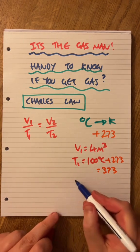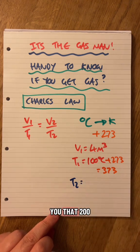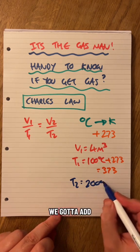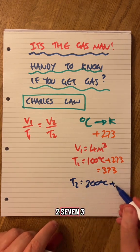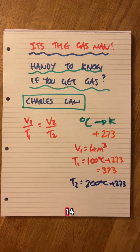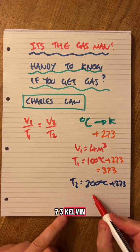T2 is going to be, let's just give you that, 200 degrees C. We've got to add 273, which gives us 473 Kelvin.